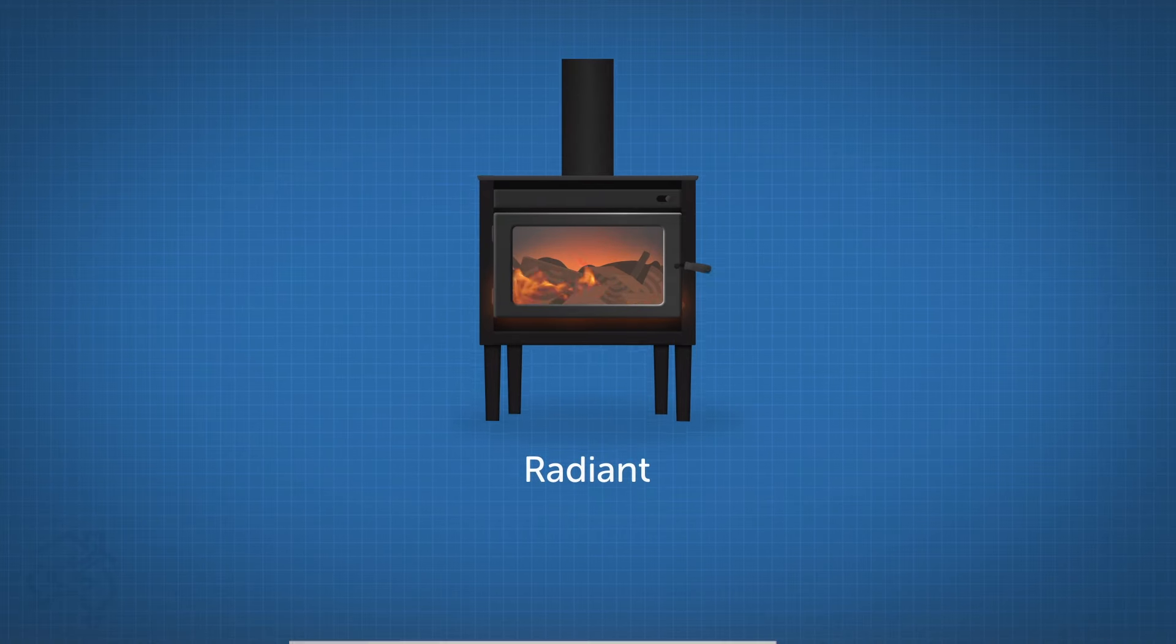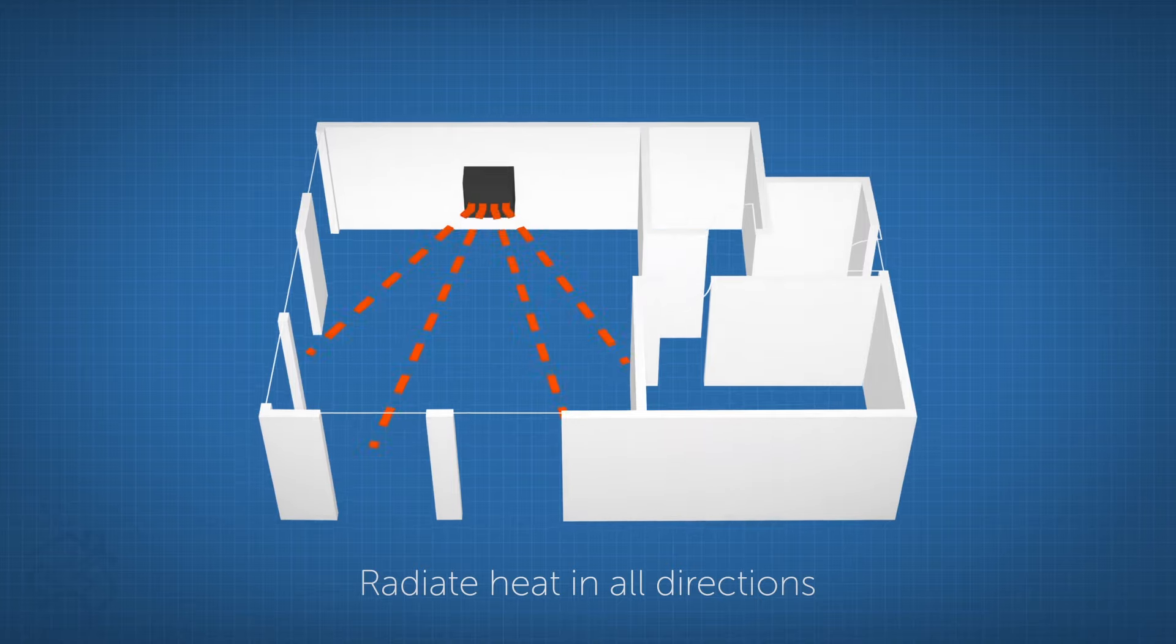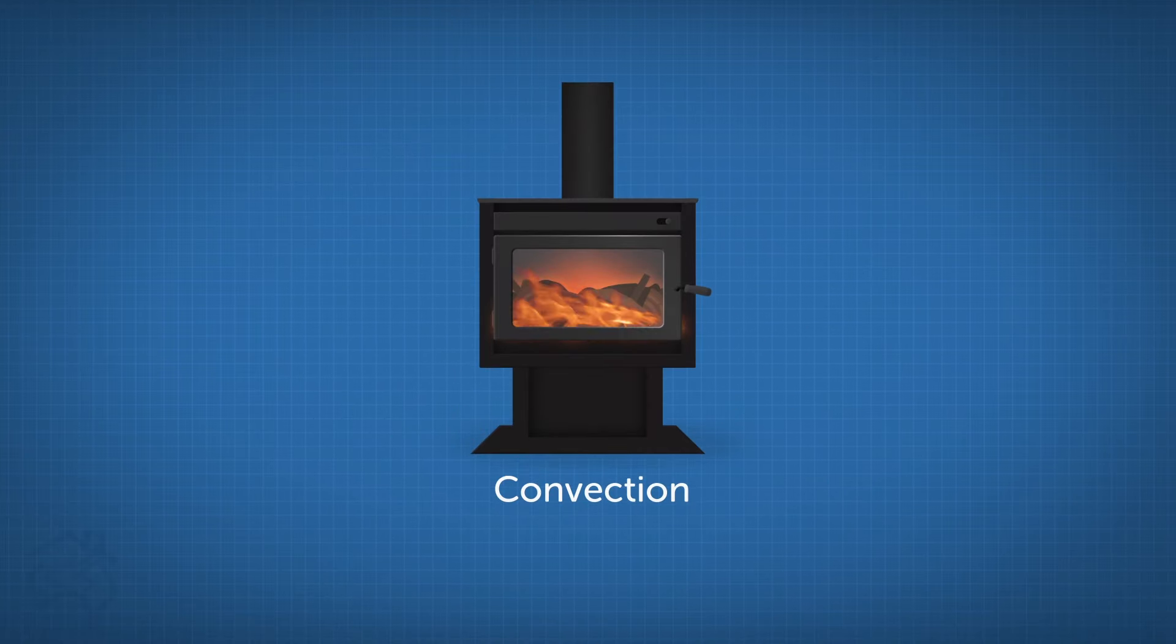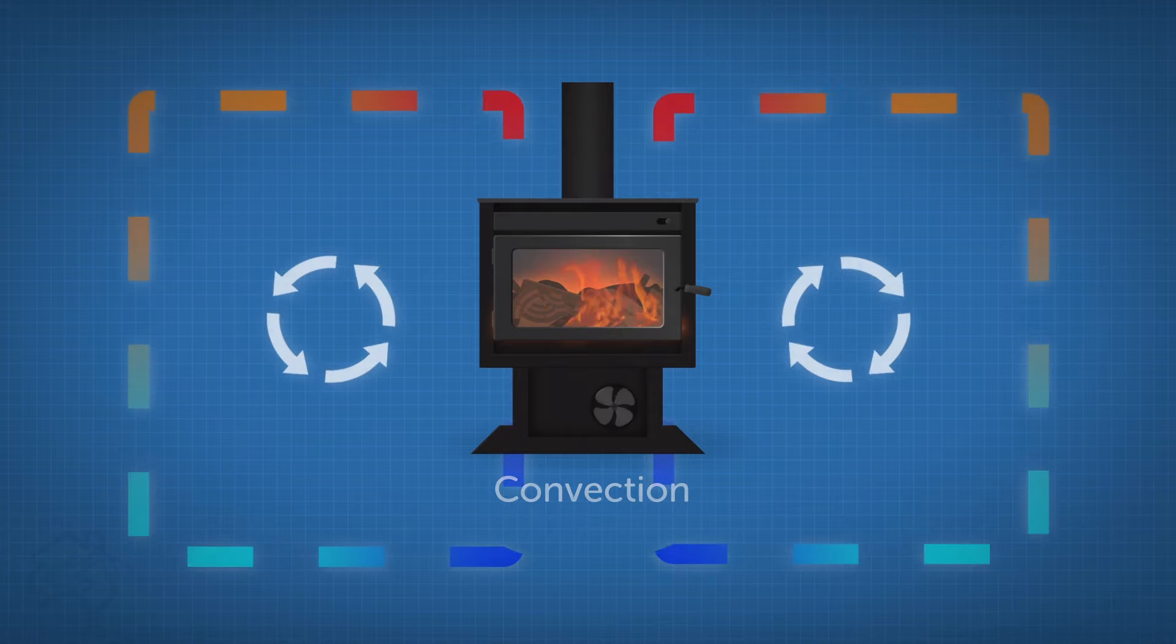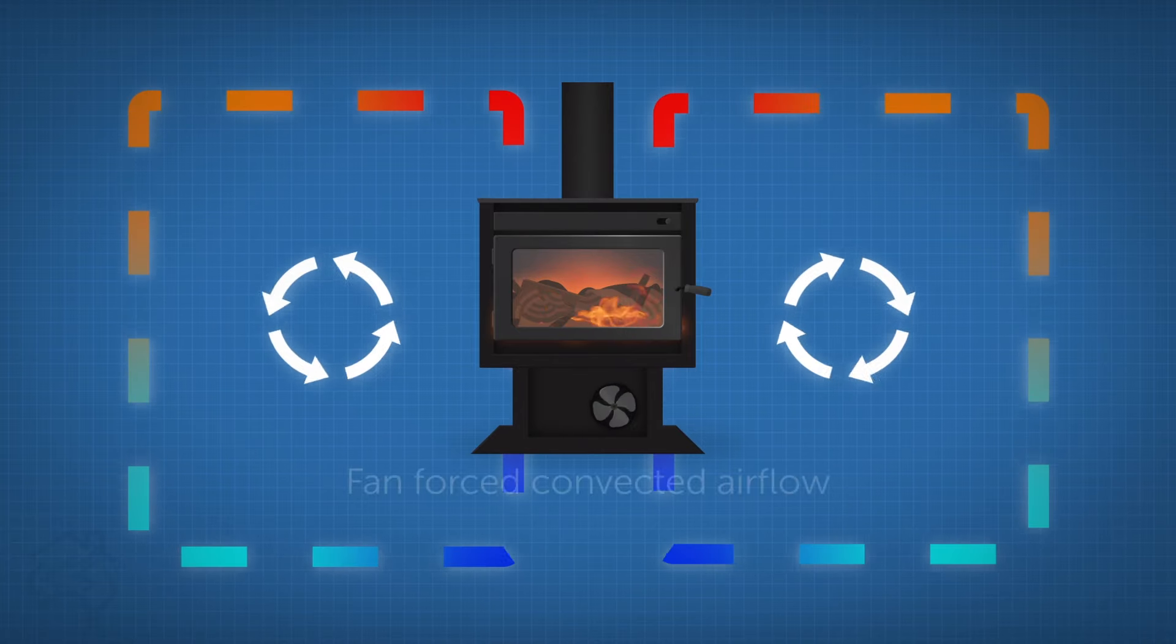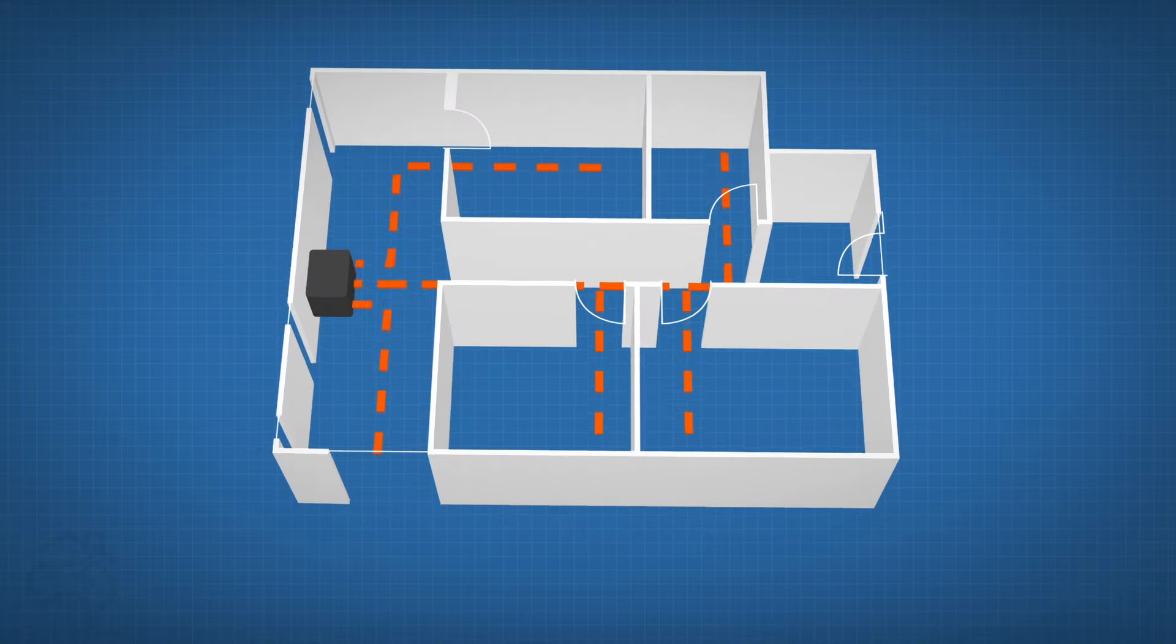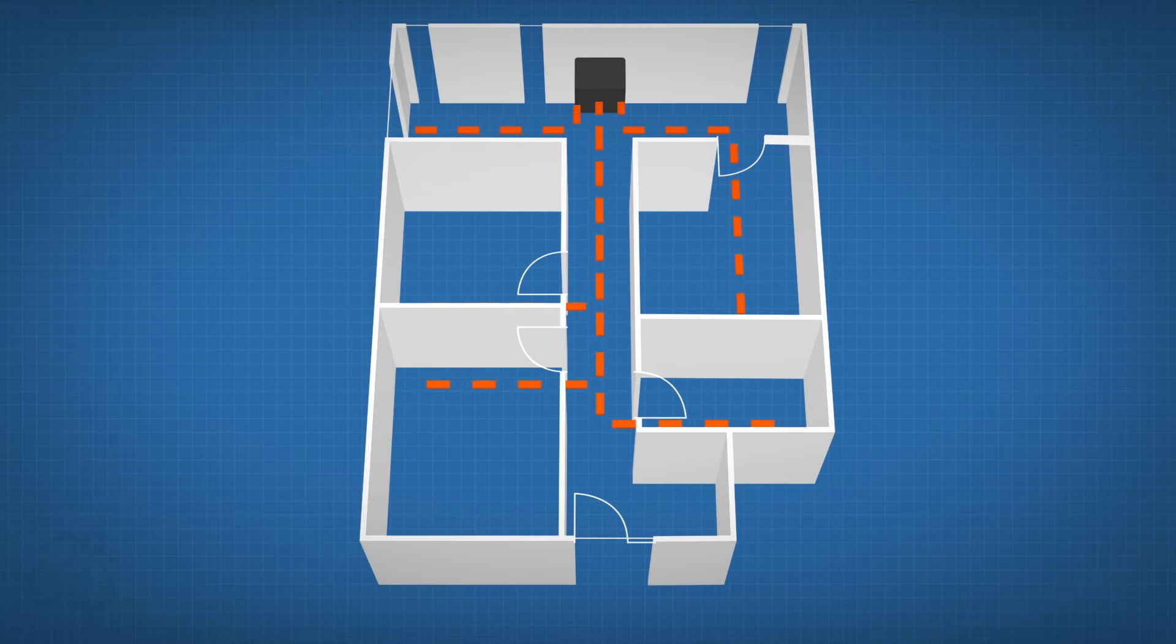Radiant heaters heat like the sun. They radiate heat in all directions and are excellent for large open areas. A convection heater heats up the air in and around the unit and circulates it around the house by fan-forced convected airflow. Convection heaters are best for moving warm air up hallways and into other rooms.